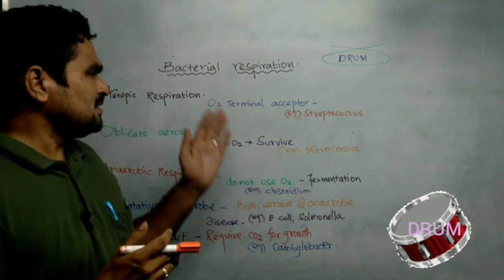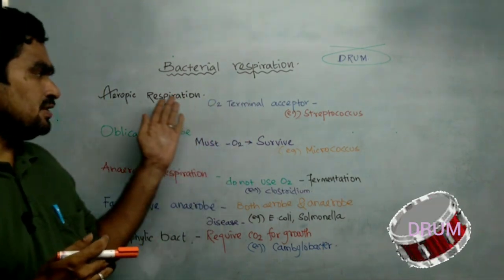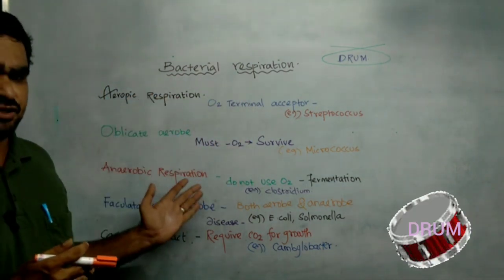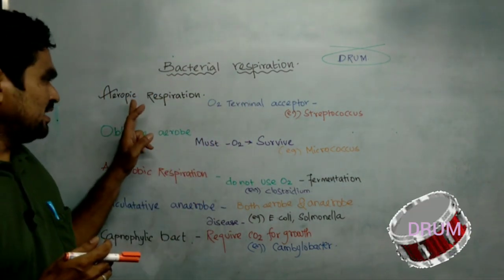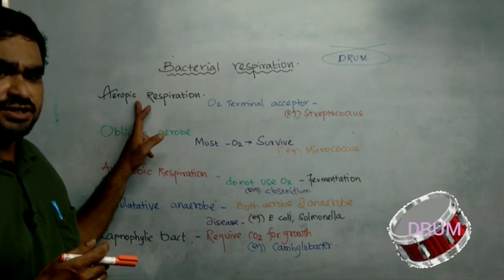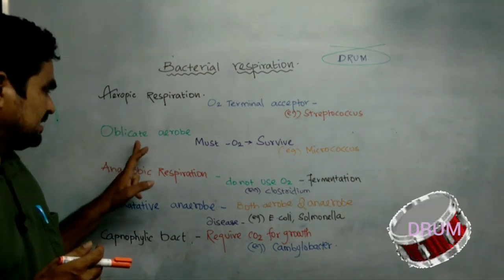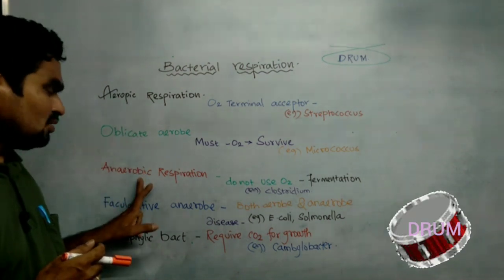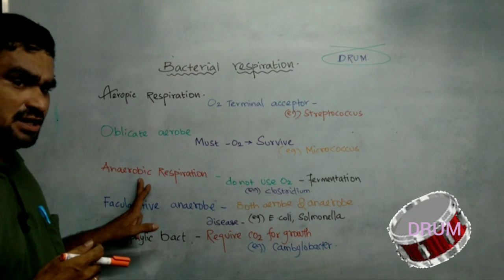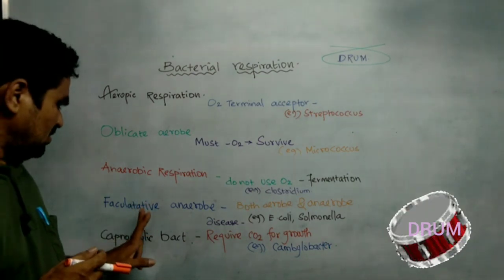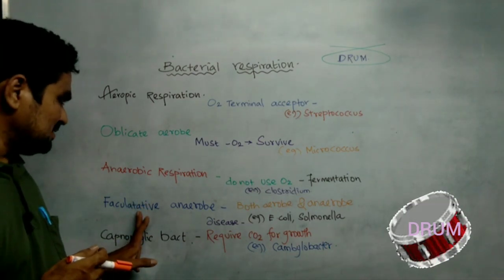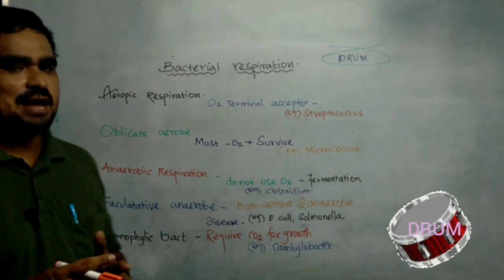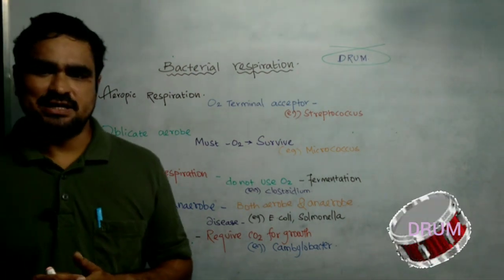Bacterial respiration involves five kinds. The first one is aerobic respiration. The second one is obligate aerobes. The third one is anaerobic respiration. The fourth one is facultative anaerobes. The fifth one is capnophilic bacteria.